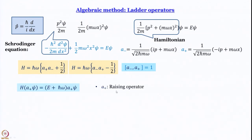Then we came to the question: why is a₊ called a₊ and a₋ called a₋? We proved that when a₊ operates on ψ it produces a wave function which has an eigenvalue of E + ℏω, where E is the energy of the original wave function ψ. So when a₊ operates on that wave function, the energy of the resultant wave function is increased by ℏω — one vibrational quantum. That is why a₊ is called the raising operator: it takes us up one step in the energy ladder.